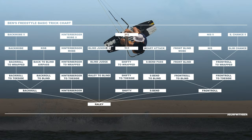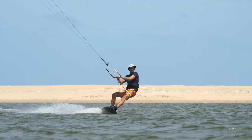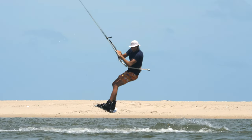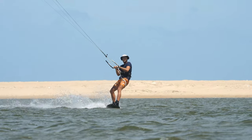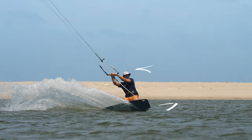Let's start the tutorial by taking a look at my freestyle basic trick chart. The backroll is positioned above the railie on the trick chart, which is theoretically correct. However, in practical terms, for most riders an unhook backroll is often easier to learn than a railie. This is because due to the rotation direction of the backroll, most riders find it easier to execute the entire edging process more intensively.